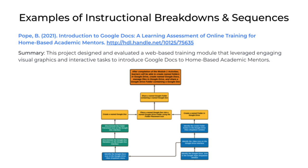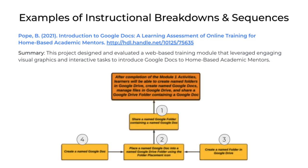He created an interesting graphic where he distinguished between entry-level skills—the skills he assumed his target audience was bringing to the table—and then in the orange box, he specified the terminal objective. After completion of module one activities, learners will be able to create named folders in Google Drive, create named Google Docs, manage files in Google Drive, and share a Google Drive folder containing a Google Doc. Those are all the specific competencies he wanted his learners to know.